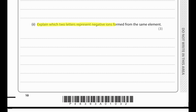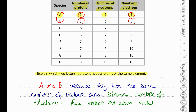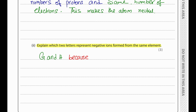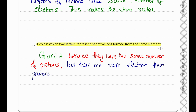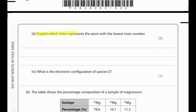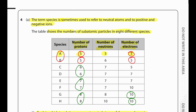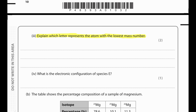To find negative ions formed from the same element, they must have the same number of protons. G and H have both gained two electrons, so they have more electrons than protons. The atom with the lowest mass number is A because it contains 5 protons and 5 neutrons, giving a total mass number of 10 — it has the fewest total number of protons and neutrons.